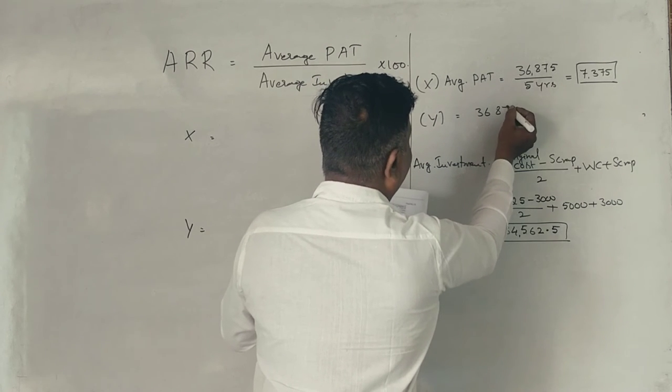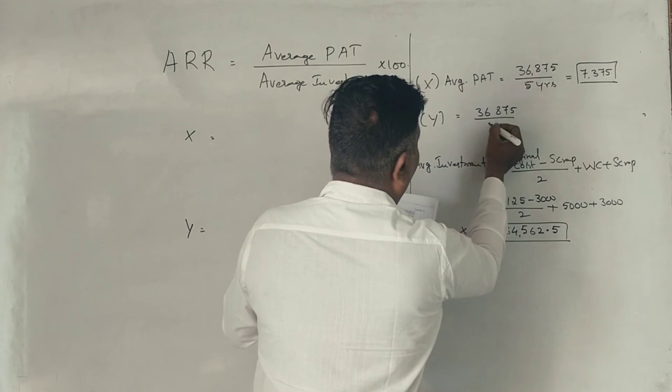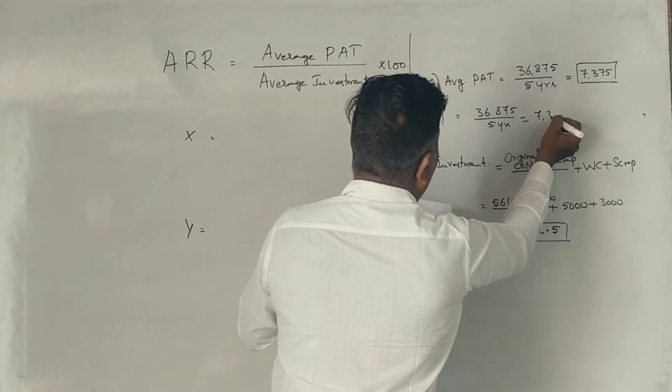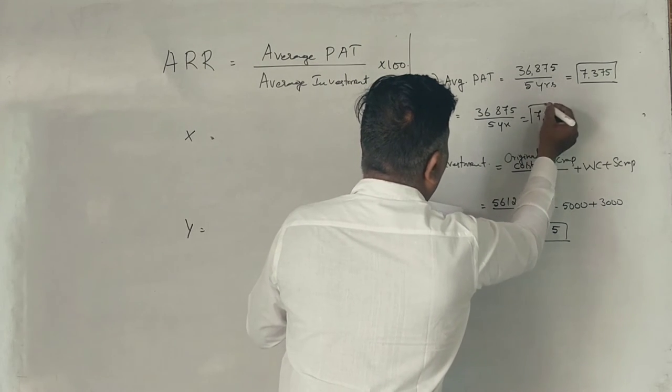It is $36,875 divided by 5 years. You will get the same number, correct? Same number you will get.